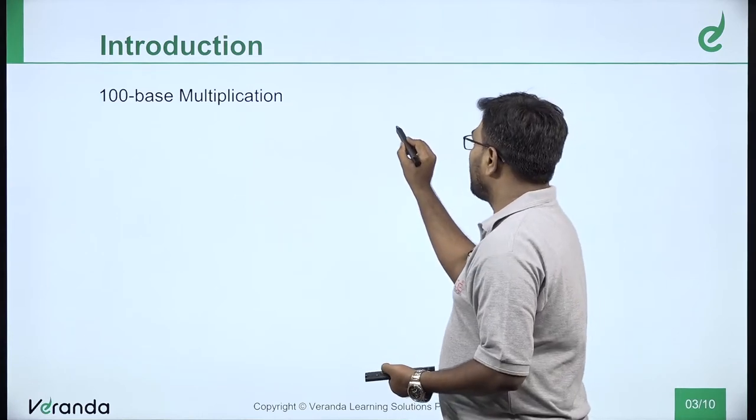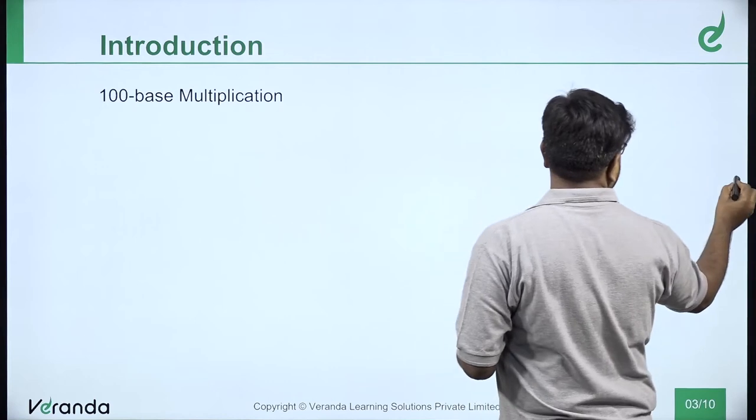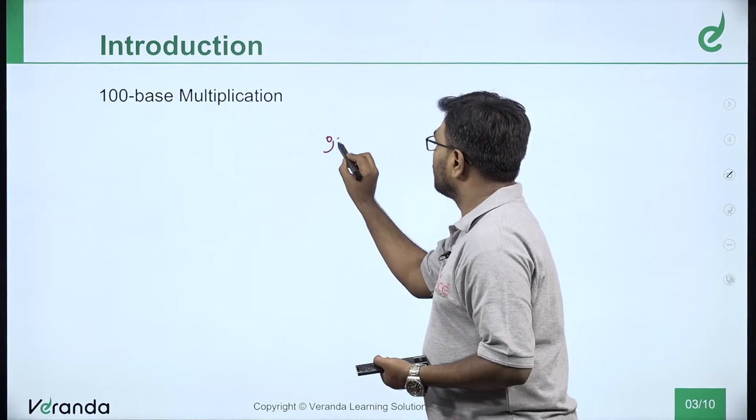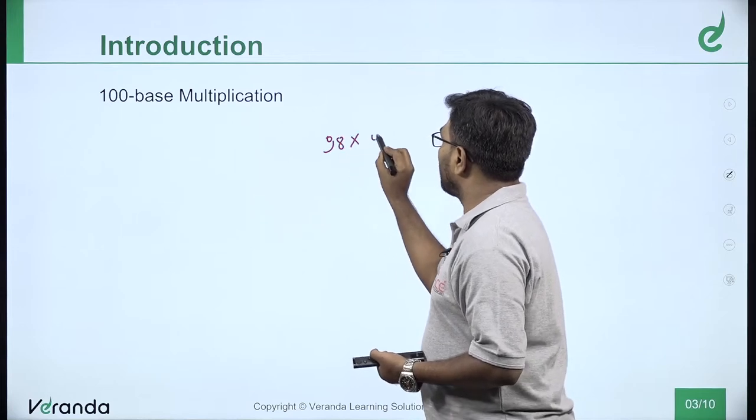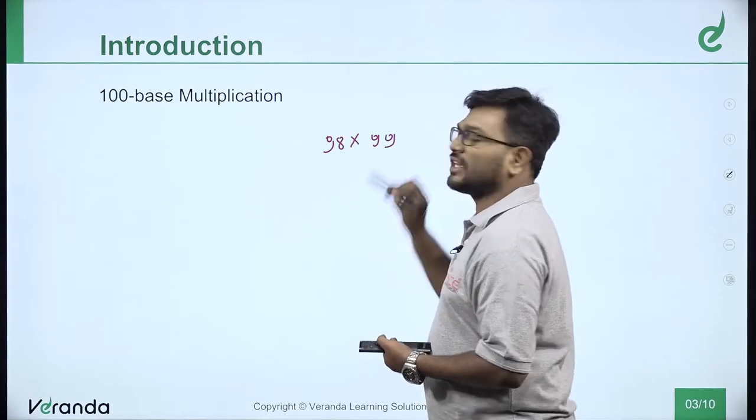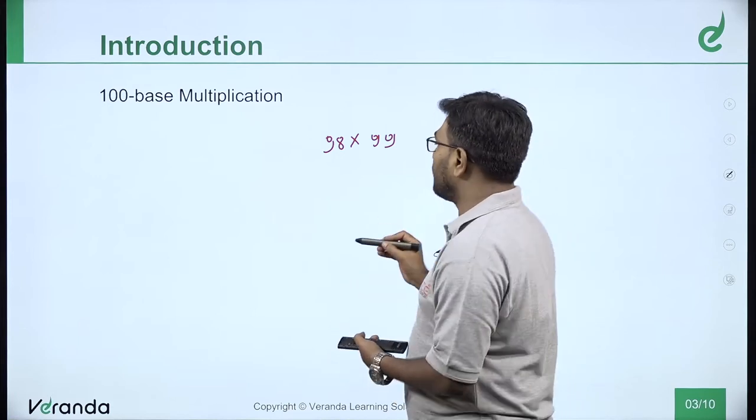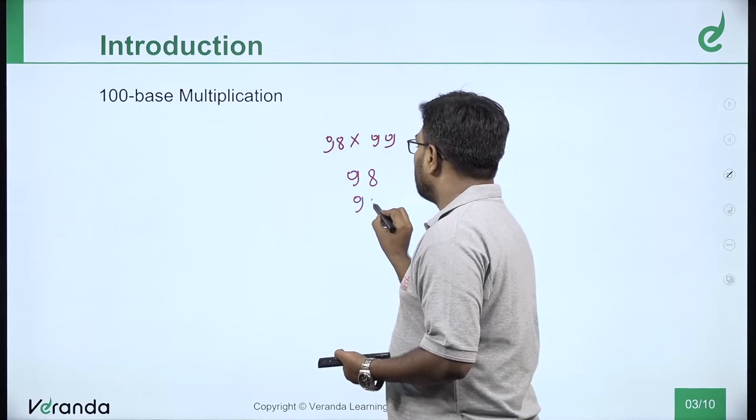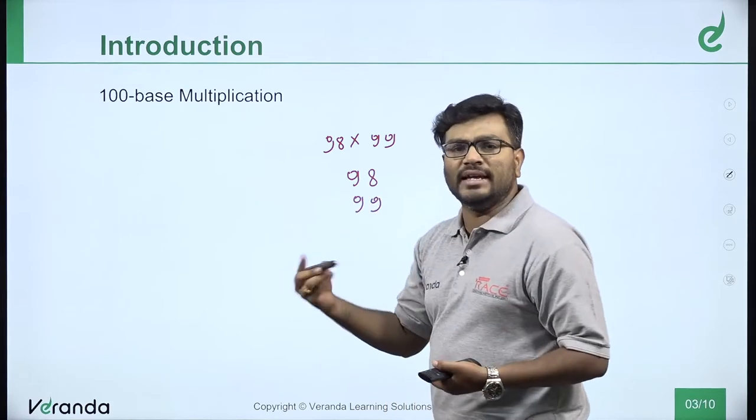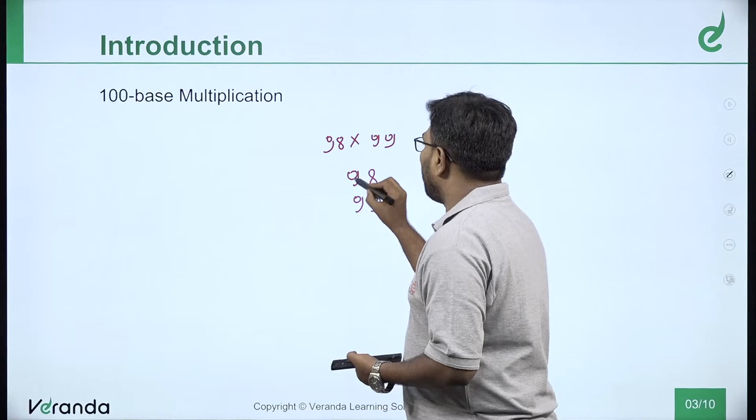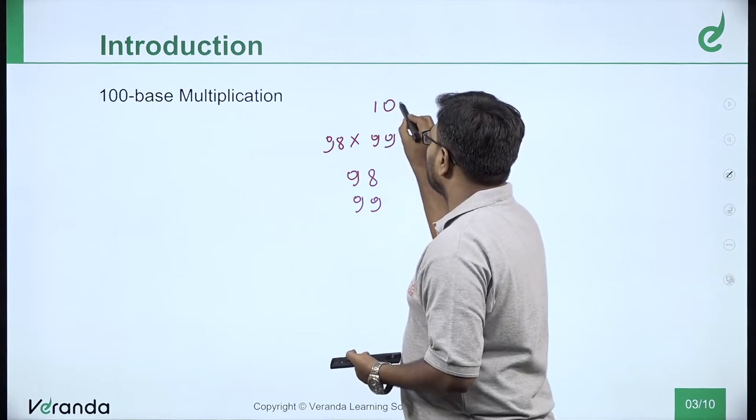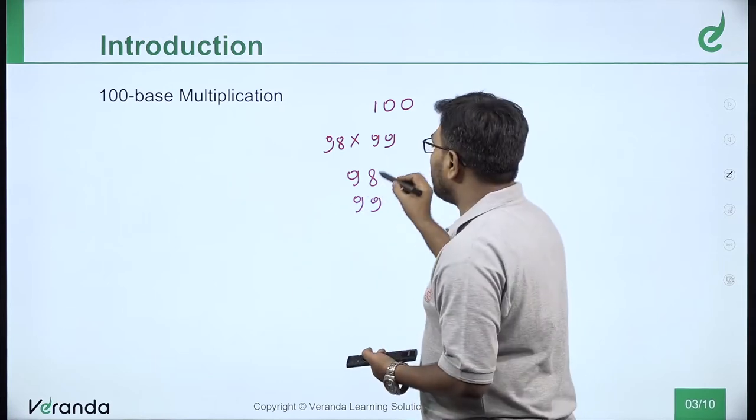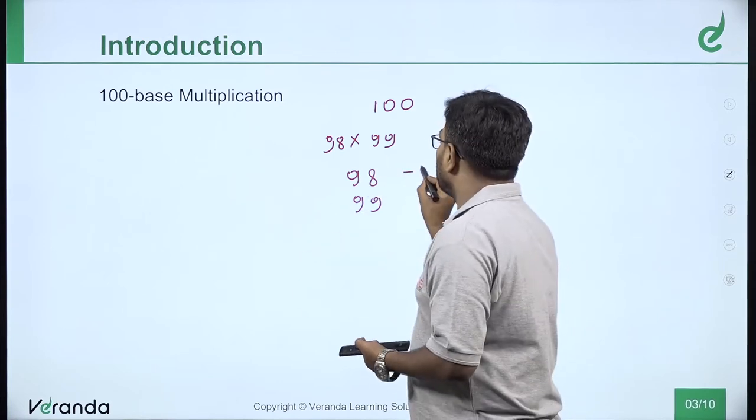For example, 98 into 99. This is called the base method multiplication. 98 into 99, the numbers are nearest to 100. I will assume the base as 100. 98 is minus 2 from the base, and 99 is minus 1 from the base.